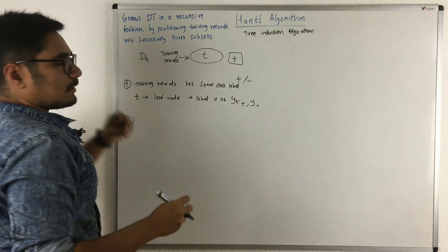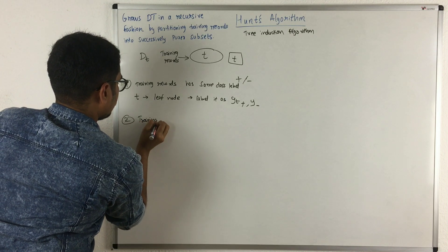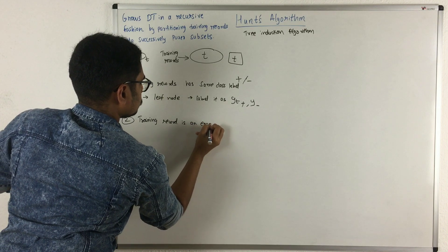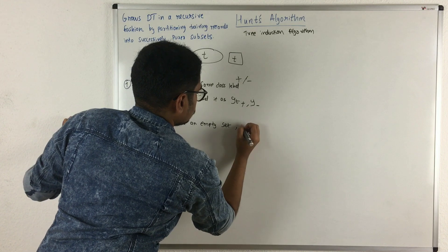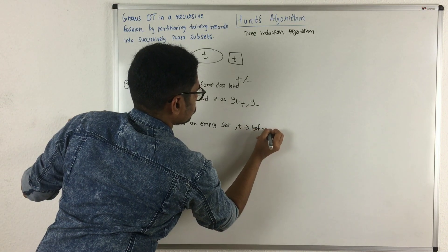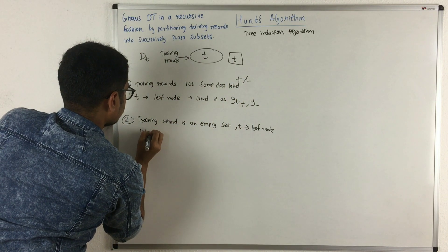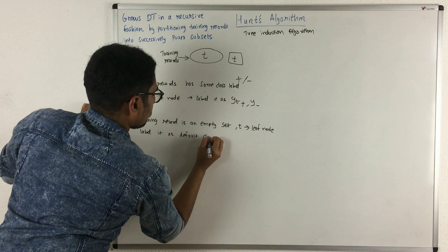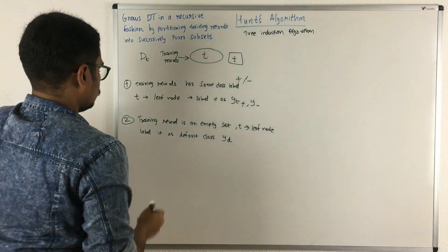The second case is that if your training record is an empty set, this case can sometimes happen. In that instance, you again represent t as a leaf node and assign it the default class label, yd. Whichever is the default class, it goes to this node.